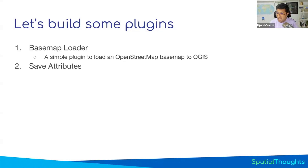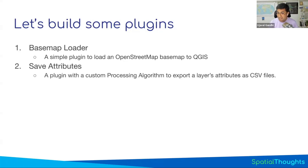Secondly, we're going to build a more complex plugin - a processing tool that will allow the user to select any vector layer and save the attribute table as a CSV file. We'll see how to add all of this functionality into a plugin and distribute it as a processing plugin. When you install it, it'll add a new tool in the processing toolbox which you can run.